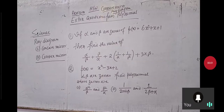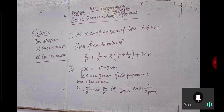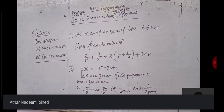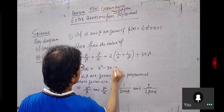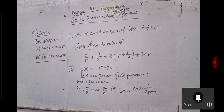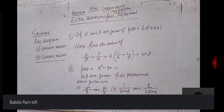Find the value of α/β + β/α + 2(1/α + 1/β) + 3αβ for the polynomial p(x) = 6x² + x + 1. Question number 2: p(x) = x² - 3x + 2, where α and β are zeros.